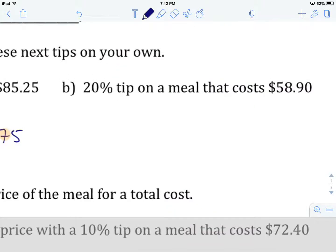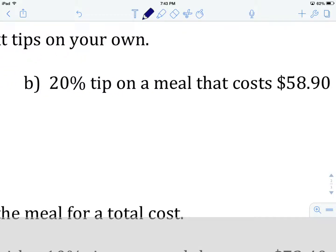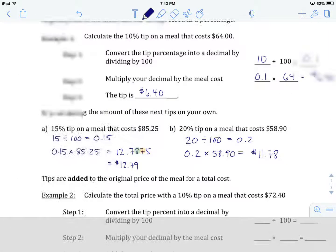What I'd like you to do here is hit pause and try example B on your own following those same steps. Okay, let's get a look. 20% tip is going to be 20% divided by 100, which gives us 0.2. We're going to take our decimal and multiply it by the cost of the meal, which is $58.90. 0.2 times 58.90 gives us $11.78. And that is the right number of decimal places, so we'll just leave it right there.